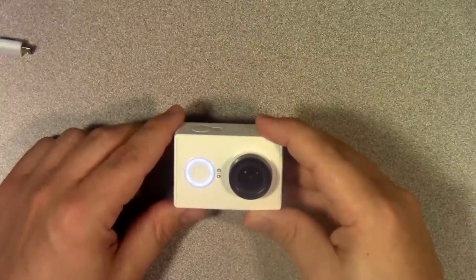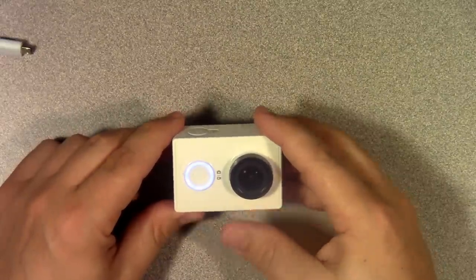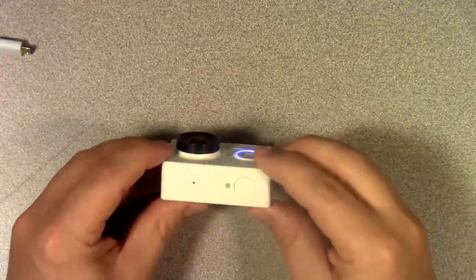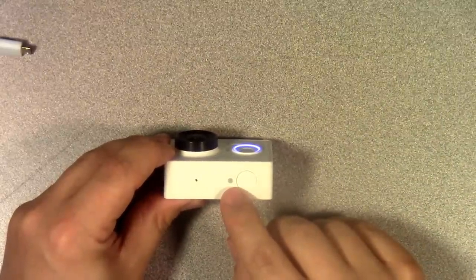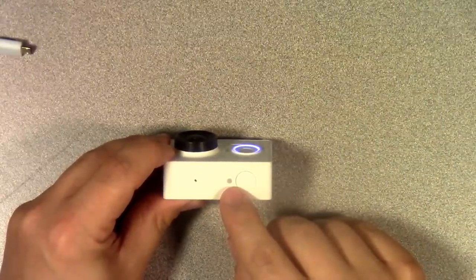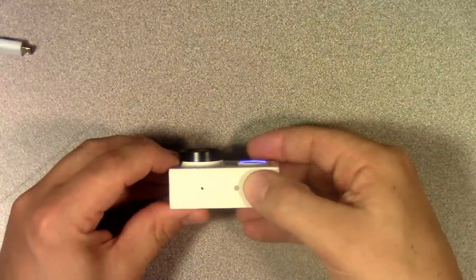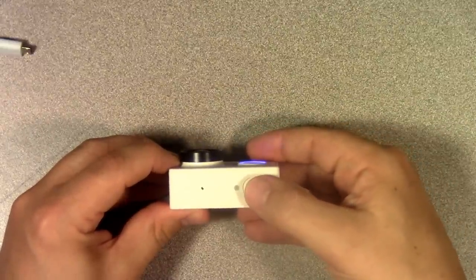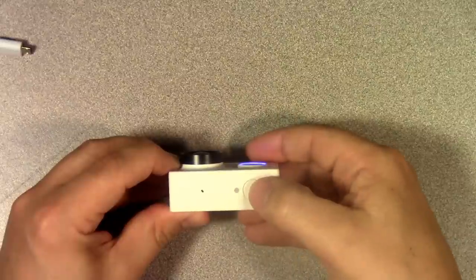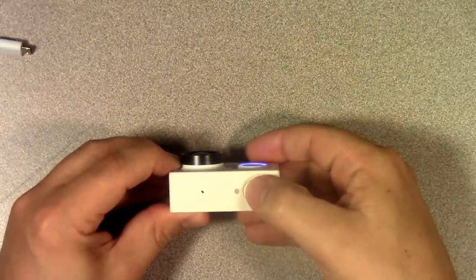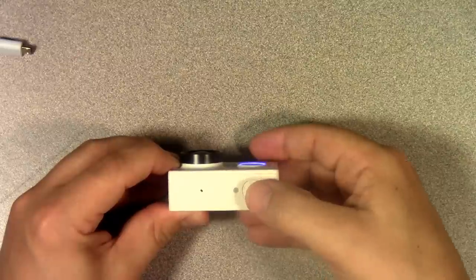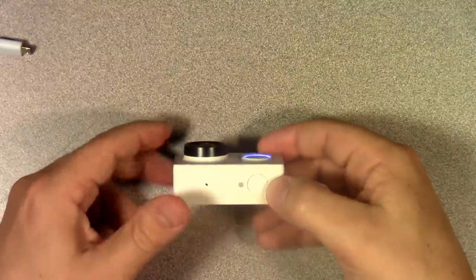Now the camera by default starts up in photo mode and you can verify that by the fact that this little light here is currently off. That means it's in photo mode. And if I tap the button here, it will take a picture and if you notice, it will flash red just after I press the button. That's actually the moment where it takes the snapshot. That's all you have to do to take a picture.